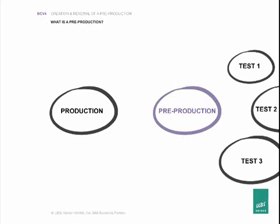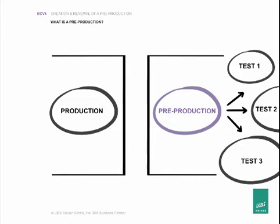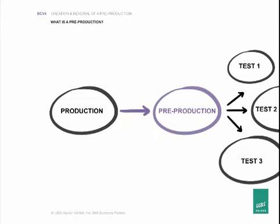If the pre-production is renewed often enough — for example nightly — then the provision of test data to the numerous testbeds can be based exclusively on the said pre-production. The production is no longer addressed for test purposes. Access to production from the QA is no longer necessary. Hence, production and test works are fully decoupled. The challenge is to find a way to renew the pre-production automatically and cost efficiently, without impacting production.